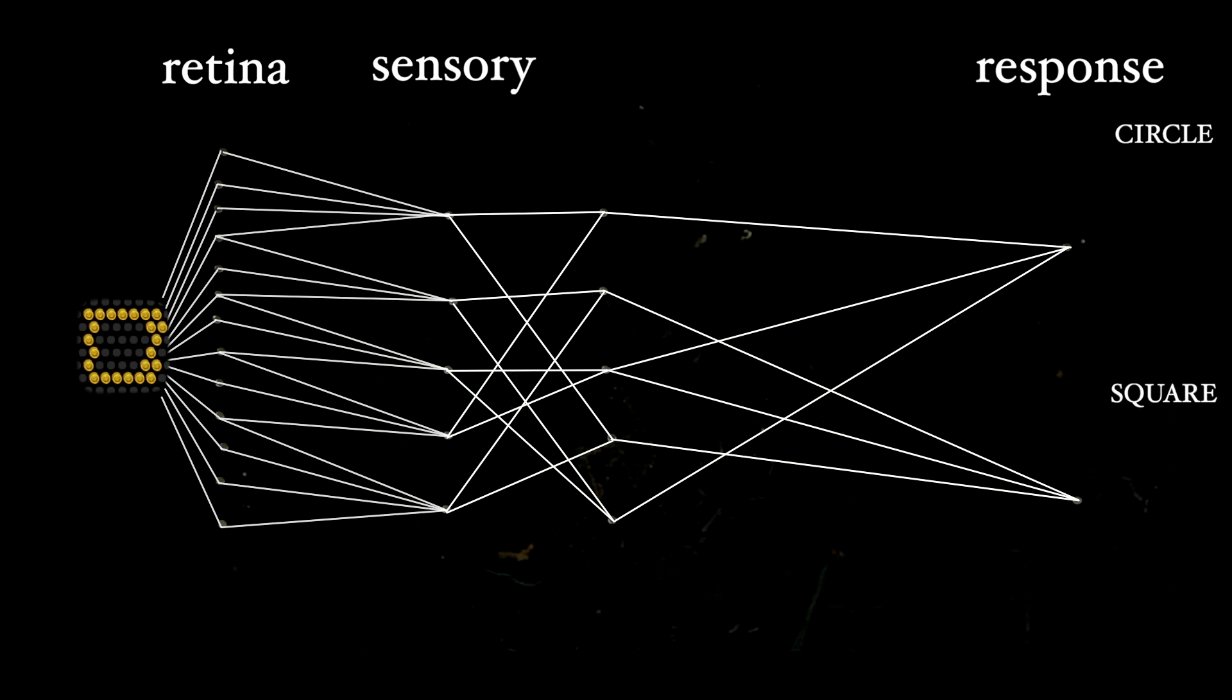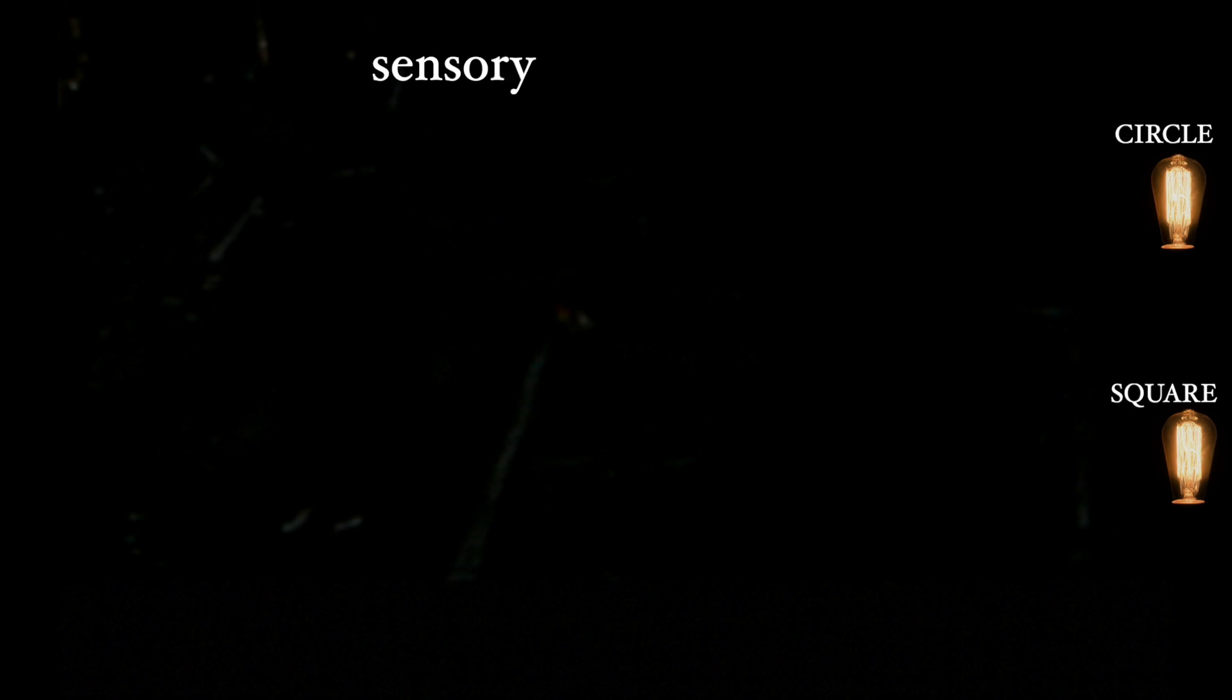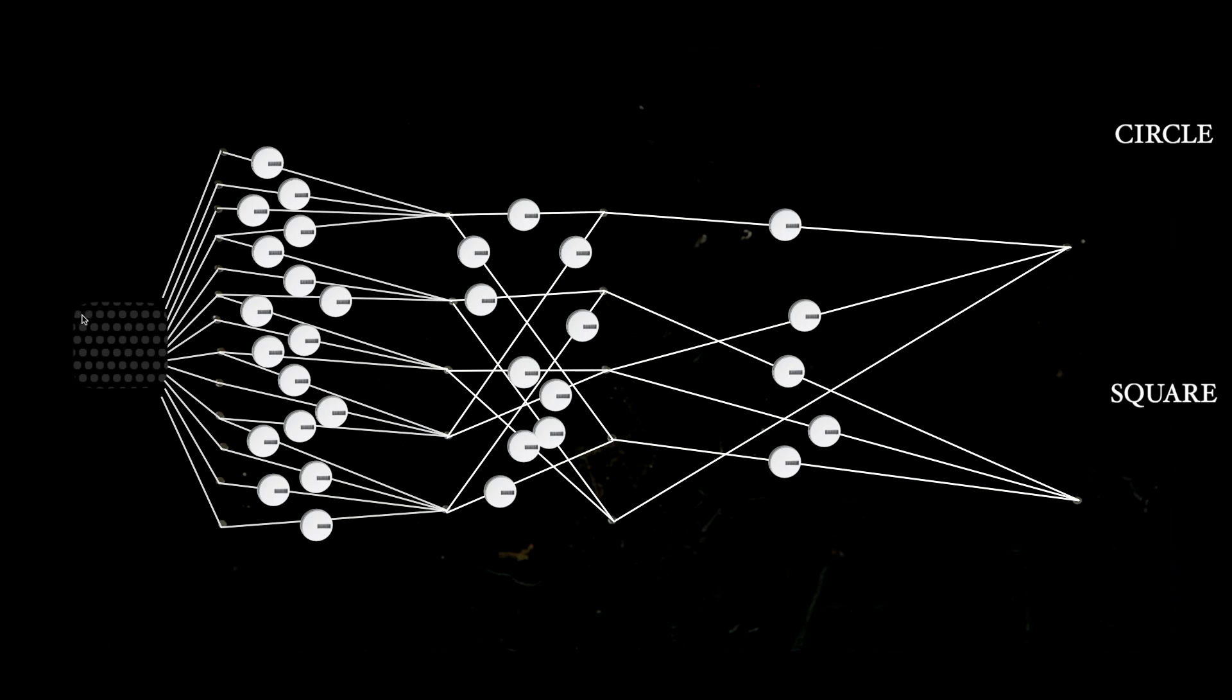And the final layer was the response layer. For example, there would be an output neuron to represent a circle and another to represent a square, each connected to a light at the end to signal its activation. And the learning was made possible with knobs which were attached to every connection that could adjust the connection strength by adjusting the flow of electricity. Exactly like a dimmer switch. This was a mechanical version of how the brain makes stronger or weaker connections between neurons.